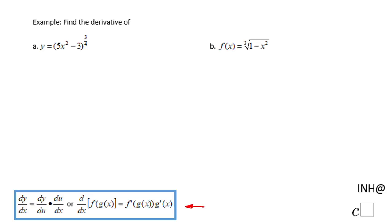Let's start with part a. y prime, which is the derivative of y with respect to x, will be the derivative with respect to x of (5x² - 3) to the power of 3/4.